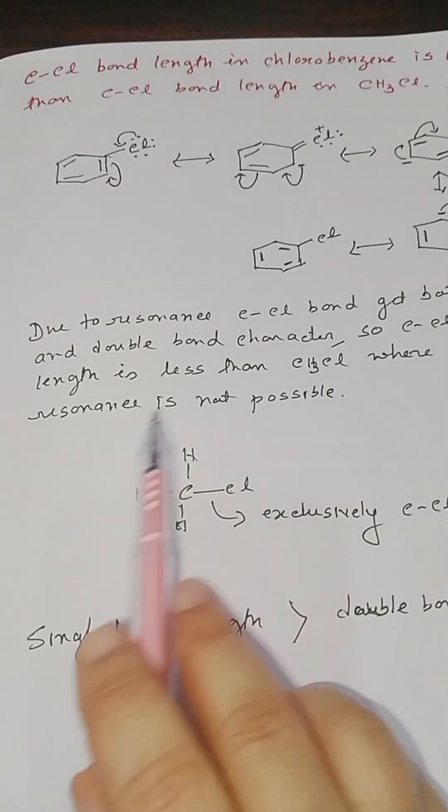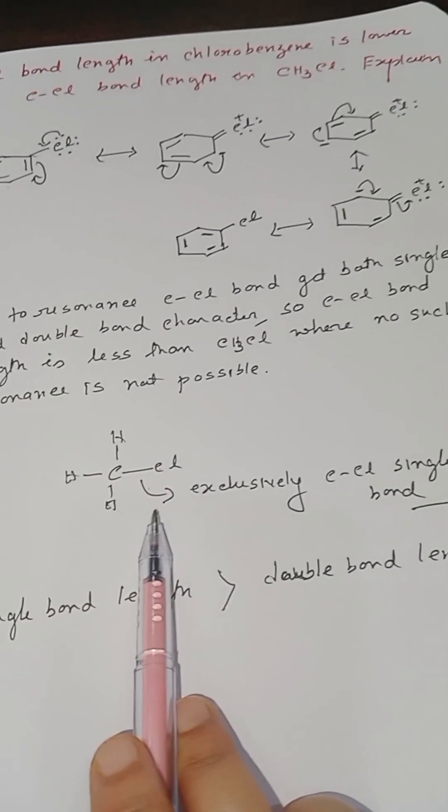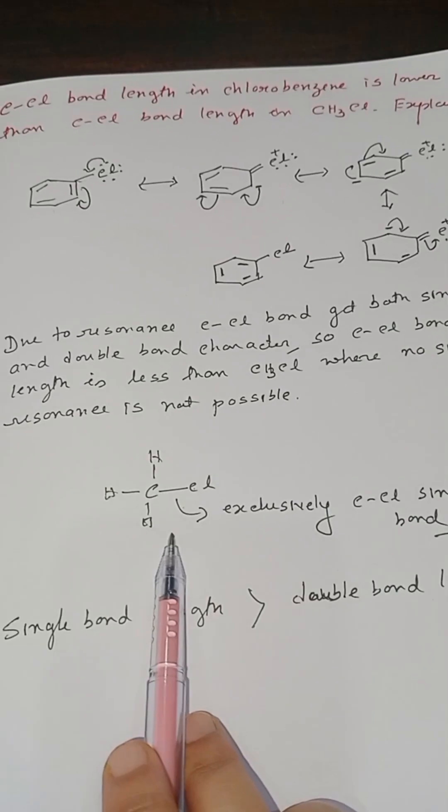But for methyl chloride, you can see the carbon-chlorine bond is exclusively a single bond, because here no such resonance is possible.